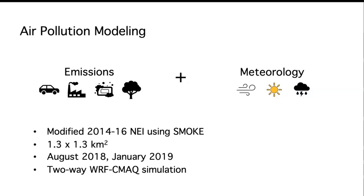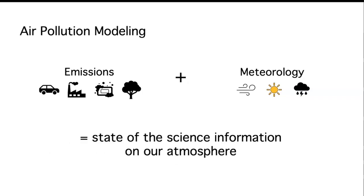We put these emissions into a two-way WRF-CMAQ simulation, which is a chemical transport model that allows communication between the chemistry and the meteorology being simulated, so they can go back and forth to determine what's happening within our atmosphere. That is all to say that we take what we know and try to make a state-of-the-science estimation of what's happening within our atmosphere.